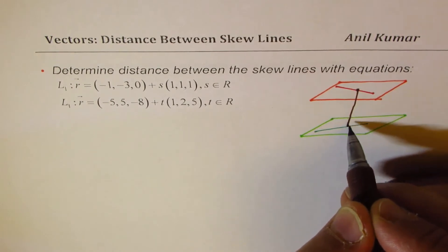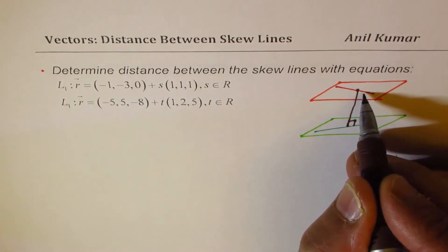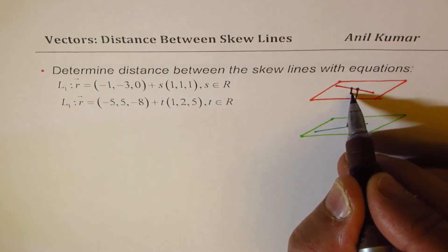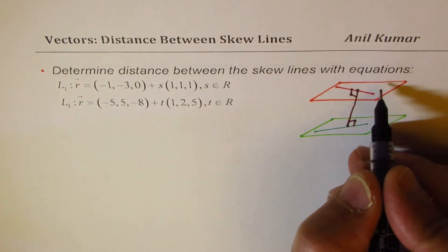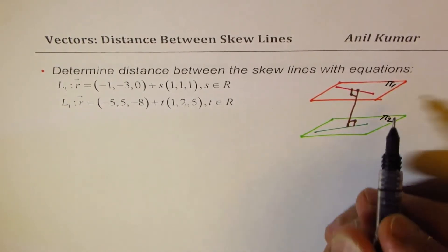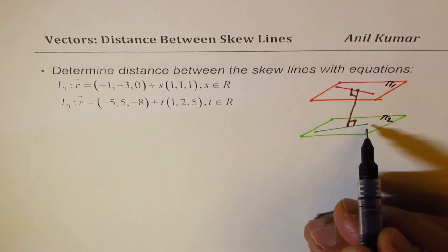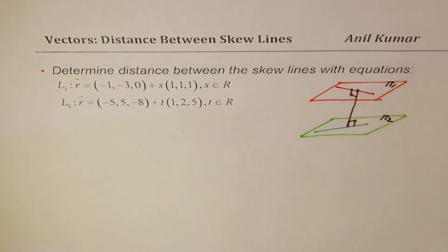As the planes are parallel, the distance between the skew lines is same as the distance between the planes. I hope you understand this distance between the planes. Since these lines are in parallel planes, let's call this plane as π1, this is π2. Since the planes are parallel they will never intersect, so none of the lines will intersect.